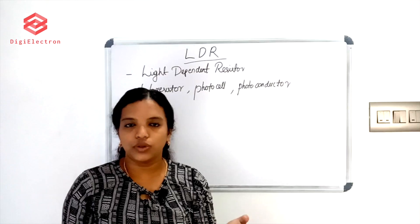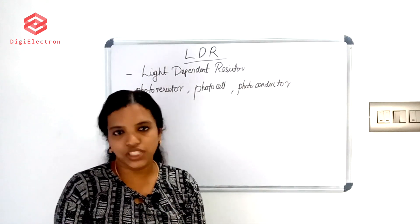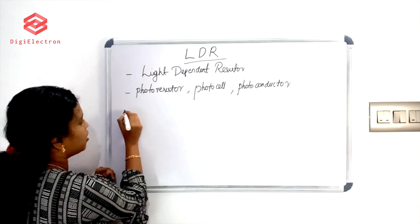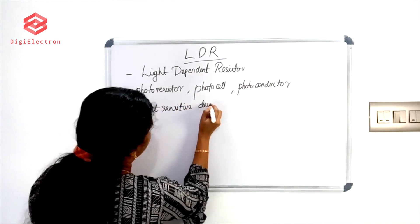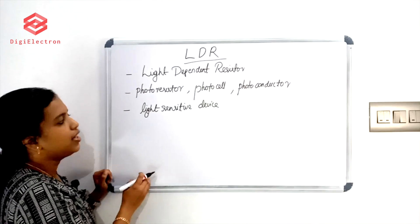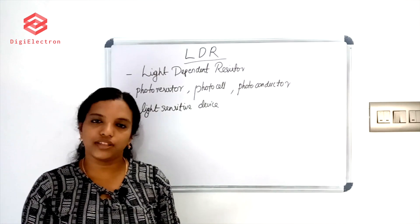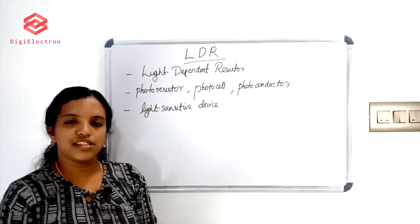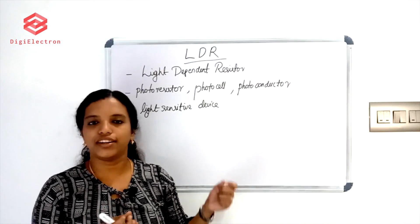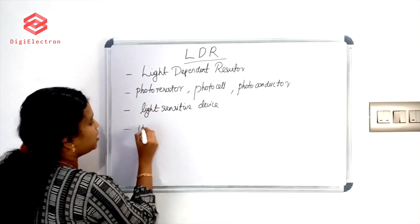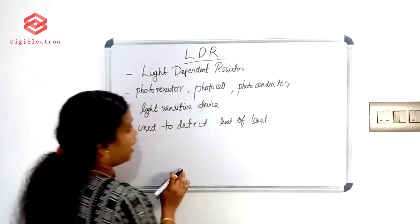All the names refer to Light Dependent Resistor. This is a light-sensitive device. When you change the light level, the resistance changes accordingly. LDR is used to detect the level of light.